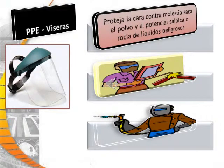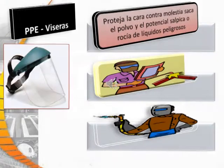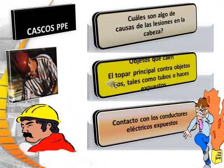Face shields protect the face from nuisance dust and potential splashes or sprays of hazardous liquid. What are some of the causes of head injuries? Falling objects, bumping your head against fixed objects such as exposed pipes or beams, or contact with exposed electrical conductors.